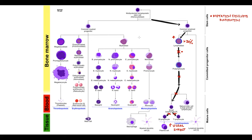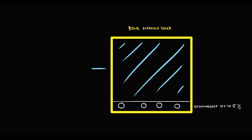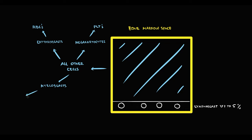Blast cells are very large and aggressive cells that proliferate rapidly, quickly invading the space inside the bone marrow. This creates a huge problem because the bone marrow is located inside bone and cannot be distended. In normal conditions, bone marrow is 100 percent packed with cells — lymphoblasts take up no more than 5 percent of space, while the remaining space is occupied by erythroblasts (making red blood cells), megakaryocytes (making platelets), and myeloblasts (making neutrophils, eosinophils, basophils, and monocytes).